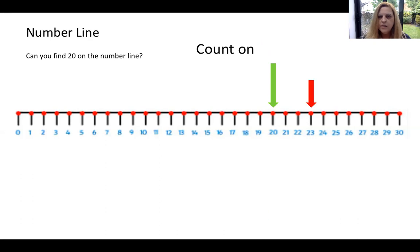Count on 5 from 20. So we start at 20 and we go 21, 22, 23, 24, 25. Are we right? Yes, 25. There we go.